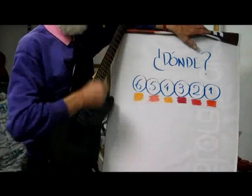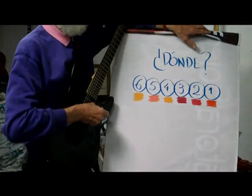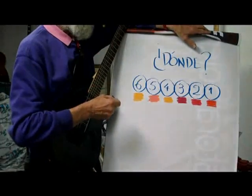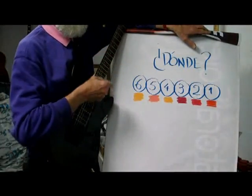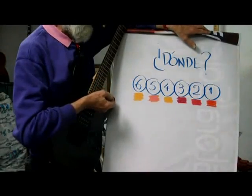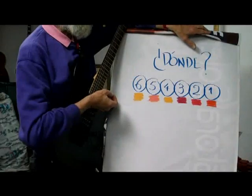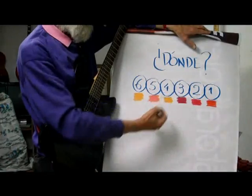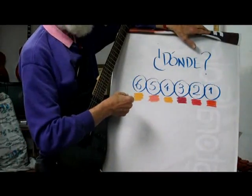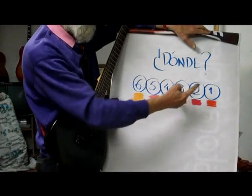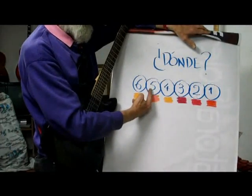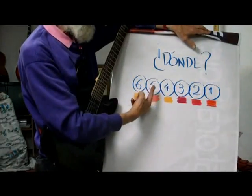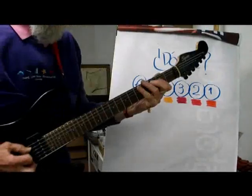Now let's look at where to do the bending — first by strings. Bending can be done on all strings, whether quarter tone, semitone, or full tone, but there are preferred strings. The 3rd string is where bending is strongest. The 2nd and 1st are also common, less so the 4th, 5th, and 6th — though on the lower strings the 5th is most used.